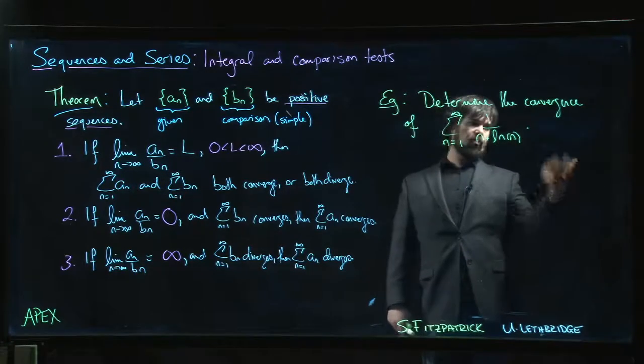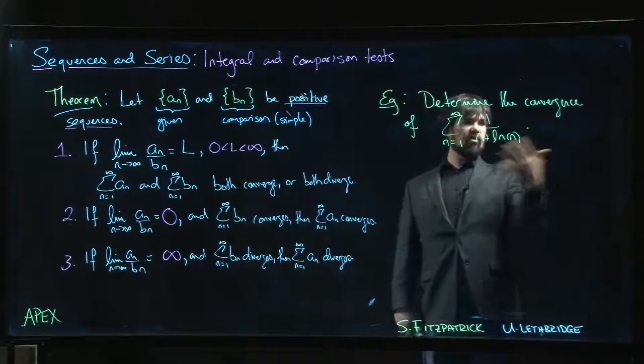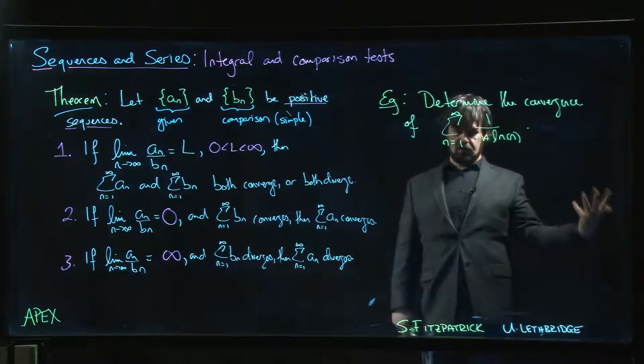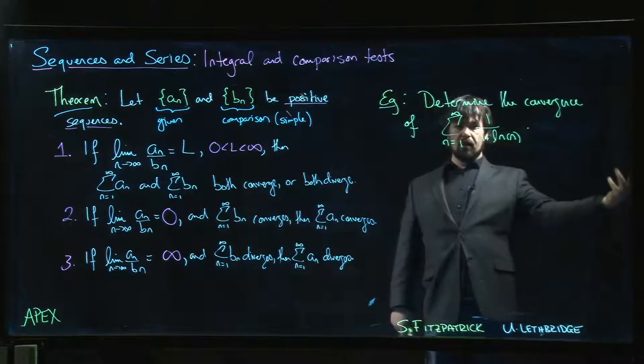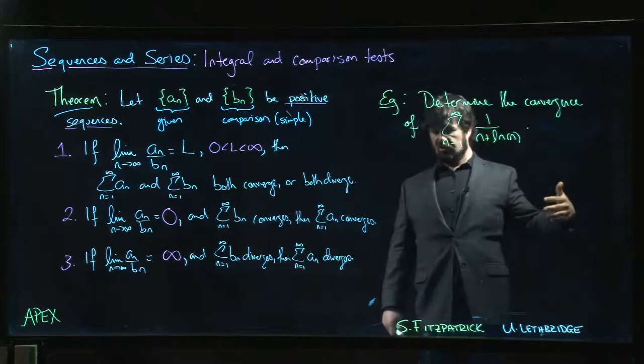These terms here are smaller than the harmonic series 1 over n. That tells you nothing because harmonic series diverges and knowing that your terms are less than a divergent series tells you nothing. You need these to either be bigger than a divergent series or smaller than a convergent series.